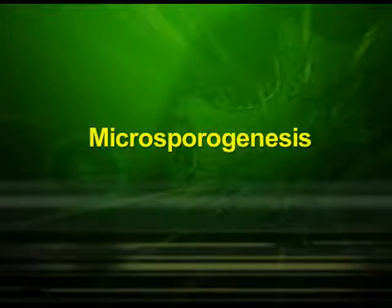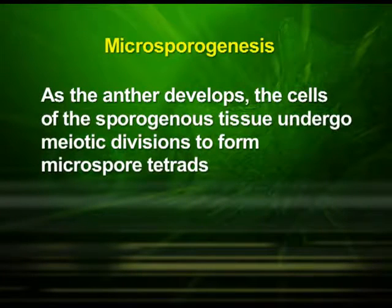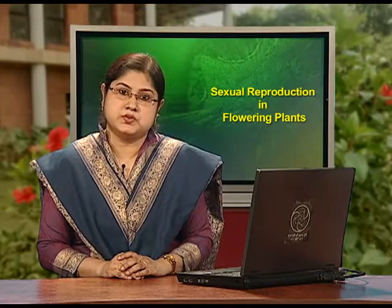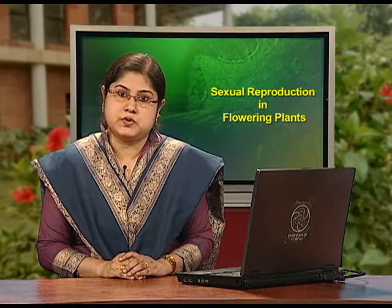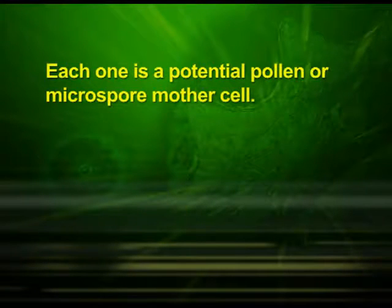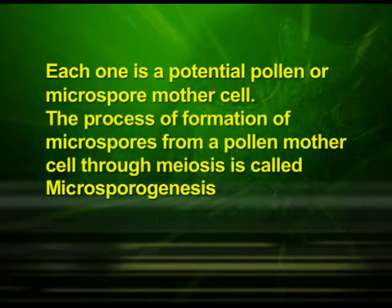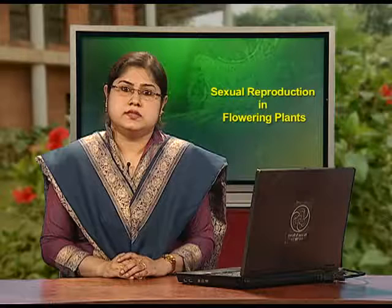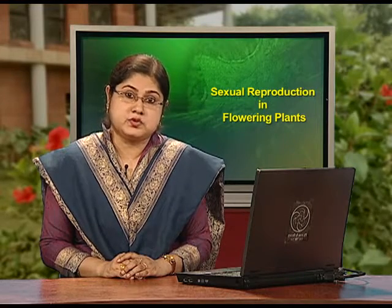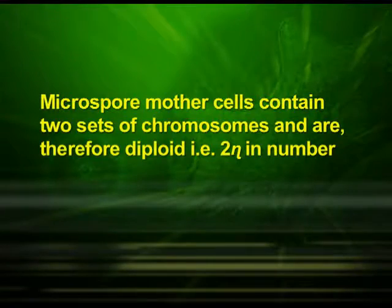Now let us understand the process of microsporogenesis. As the anther develops, the cells of the sporogenous tissue undergo meiotic divisions to form microspore tetrads. Each cell of the sporogenous tissue is capable of giving rise to a microspore tetrad. Each one is a potential pollen or microspore mother cell. The process of formation of microspores from a pollen mother cell through meiosis is called microsporogenesis. Microspore mother cells contain two sets of chromosomes and are therefore diploid, that is 2N in number.